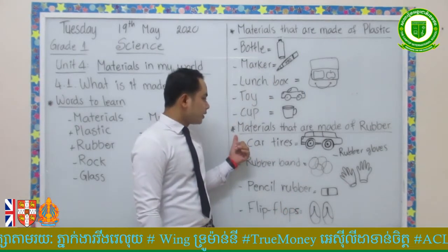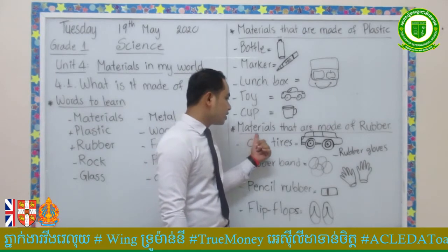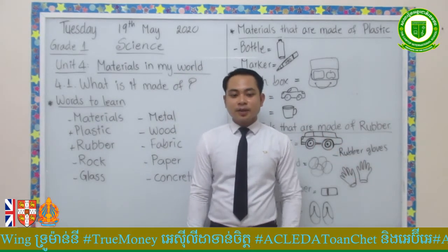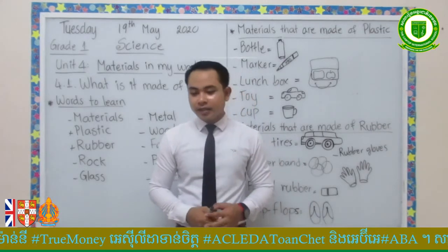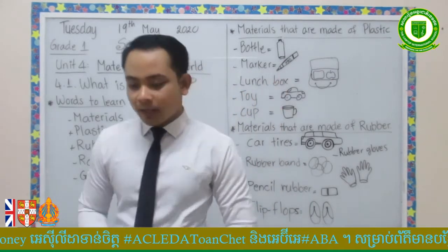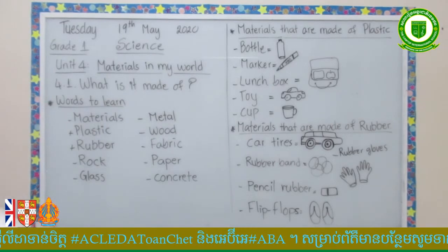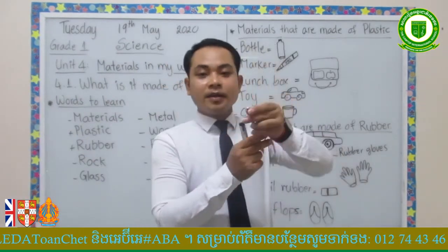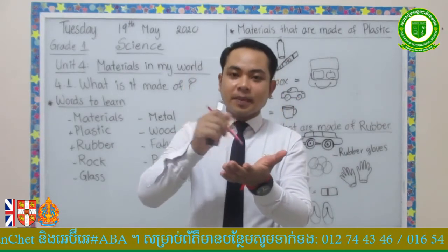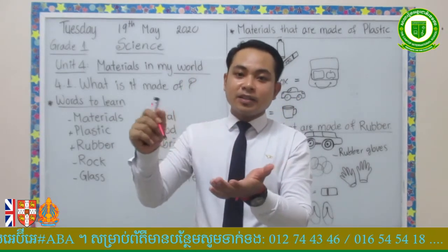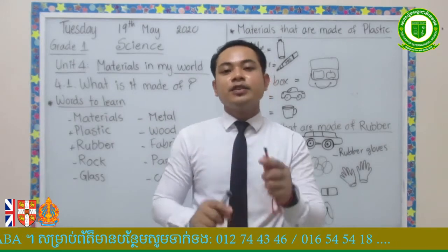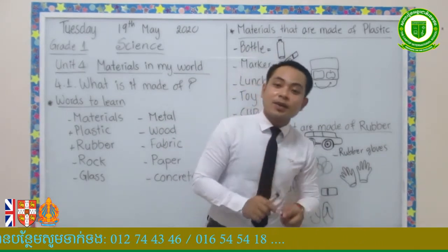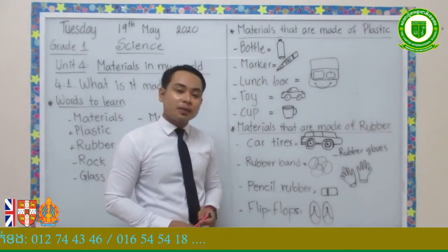Now, point two: we're going to talk about materials that are made of rubber. You know rubber? The rubber is totally different from plastic. Like this one — this is the rubber that you use to erase pencil mistakes in your writing. What are the materials that are made of rubber?